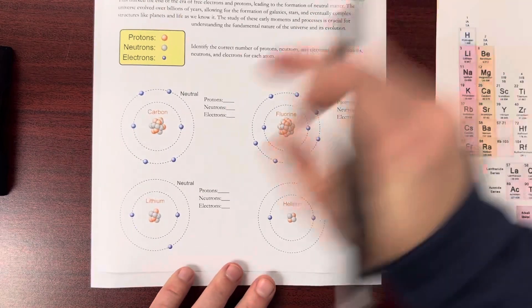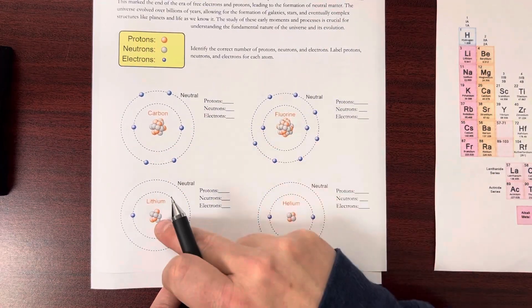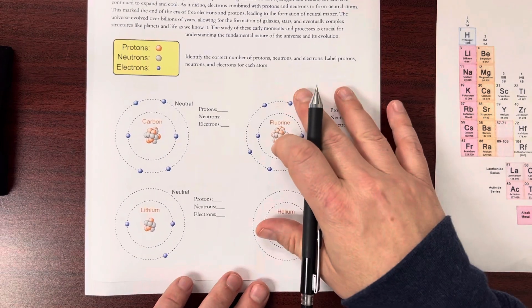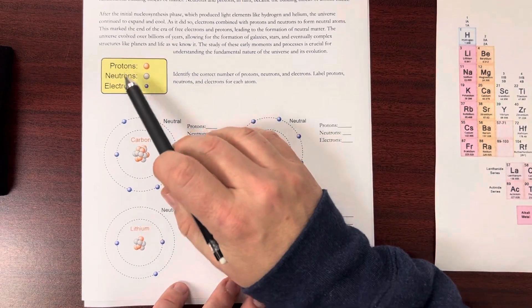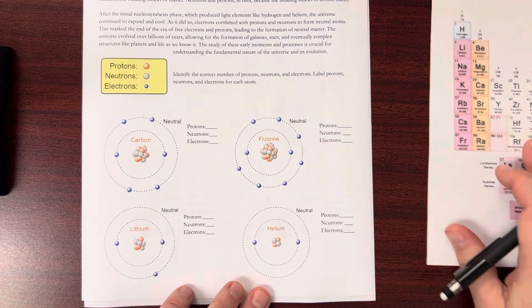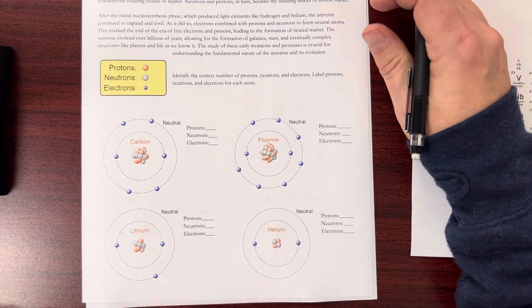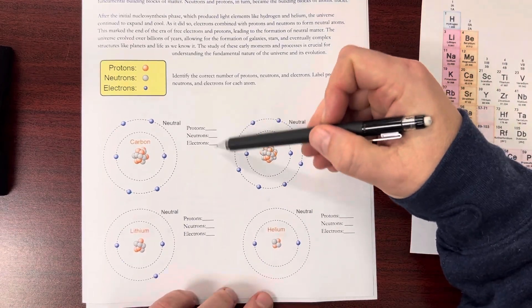We have several atoms and it tells you what atom it is. Like this is carbon, this is fluorine, lithium, etc. And then it shows you protons, neutrons, and electrons, which are each one. So what I want you to do is tell me how many of each there are.